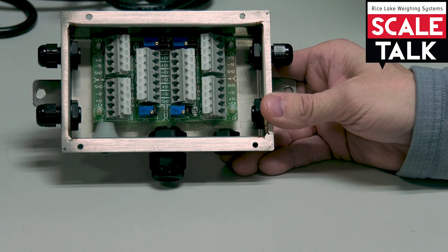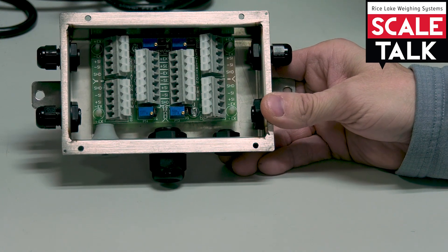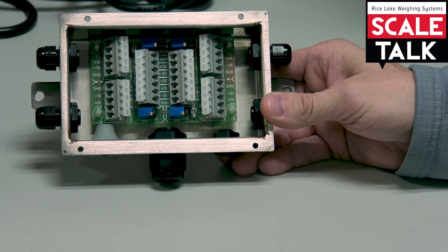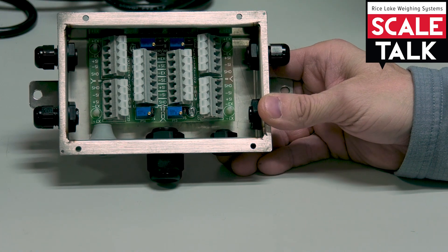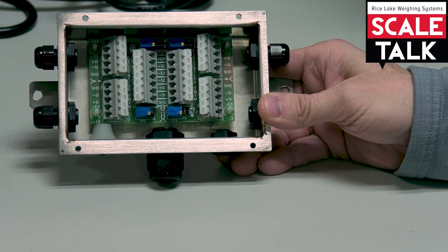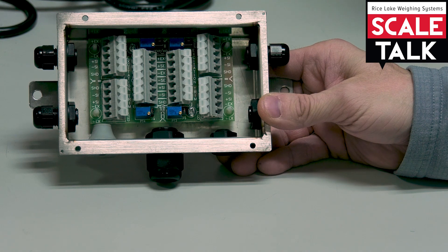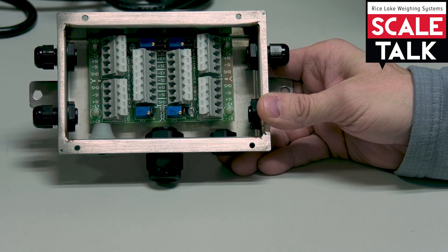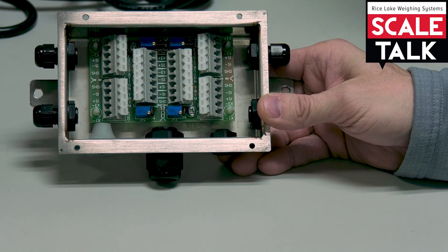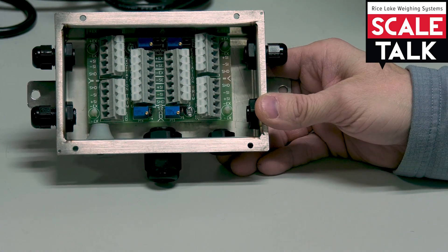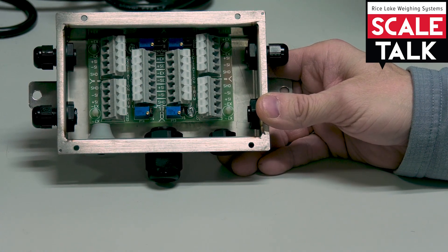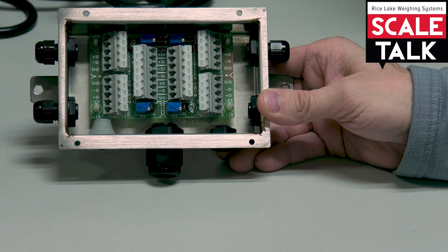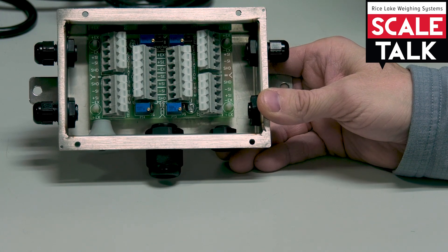So again, our J-Box allows us to bring multiple load cells together to form a single scale, gives us the ability to trim off differences between cell to cell and achieve the same signal weight ratio so that I can read the same weight no matter where I am, provides environmental protection for all of my connections, and allows me a nice convenient place to take all of the measurements I need.